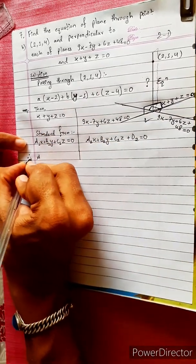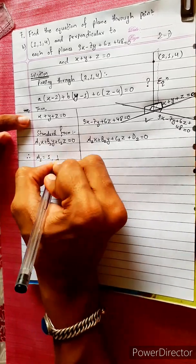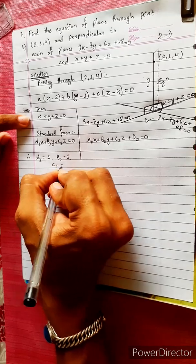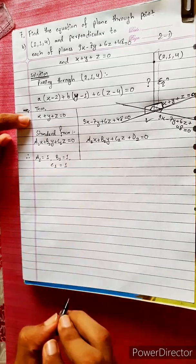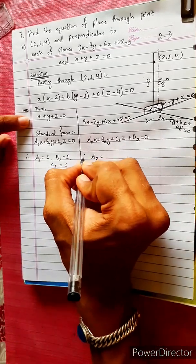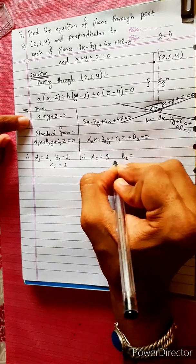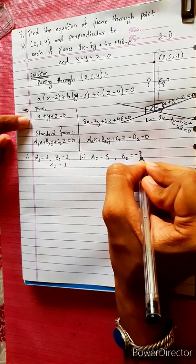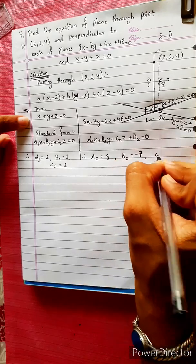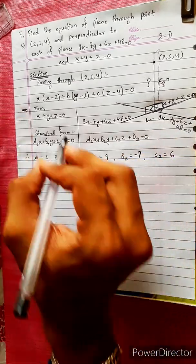Therefore, A1 equals 1, B1 equals 1, C1 equals 1. This is A2: A2 equals 9, B2 equals minus 7, C2 equals 6.